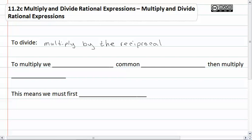And then to multiply, we factor common factors, then multiply what's left over. This means we must first factor.